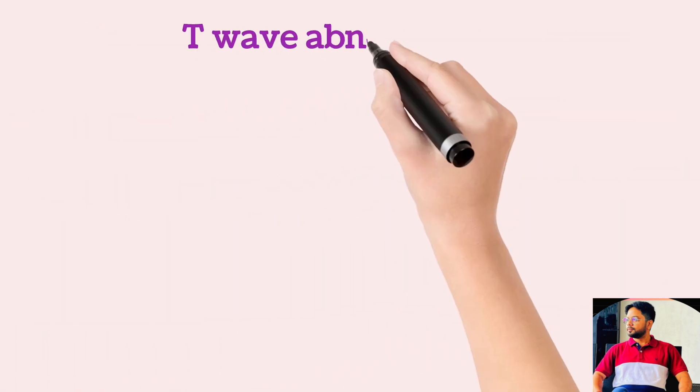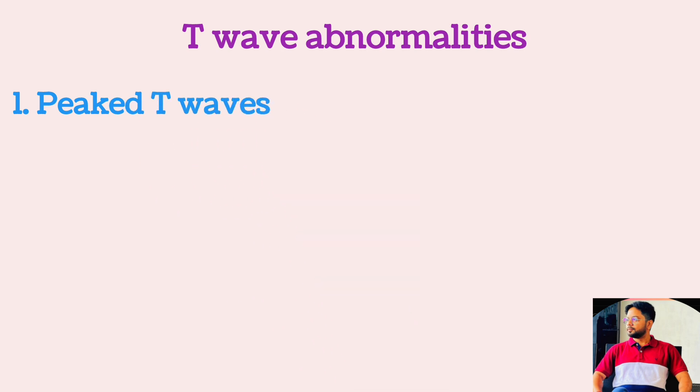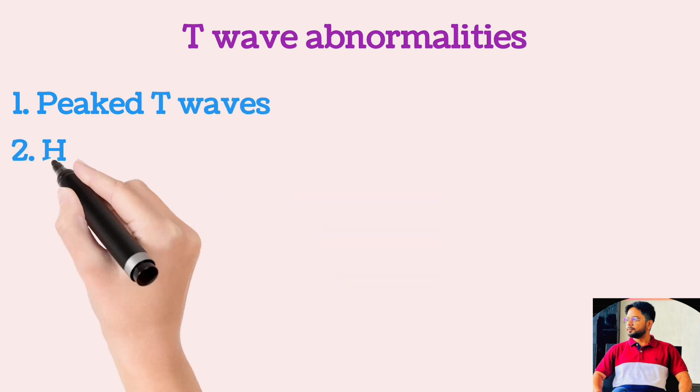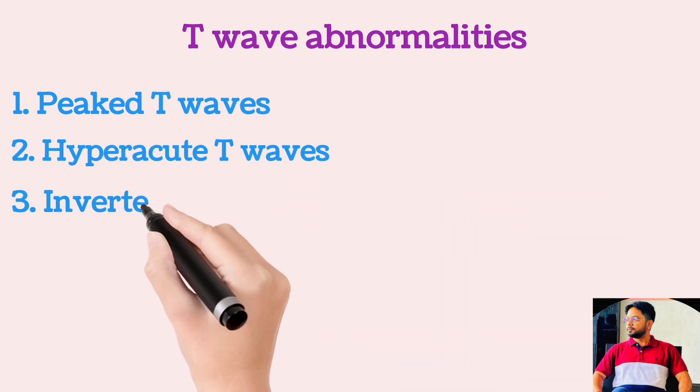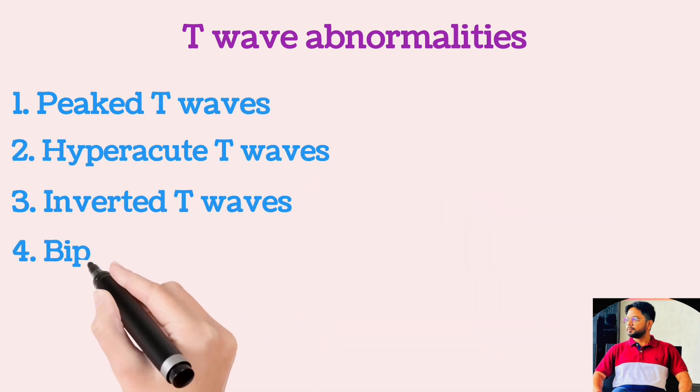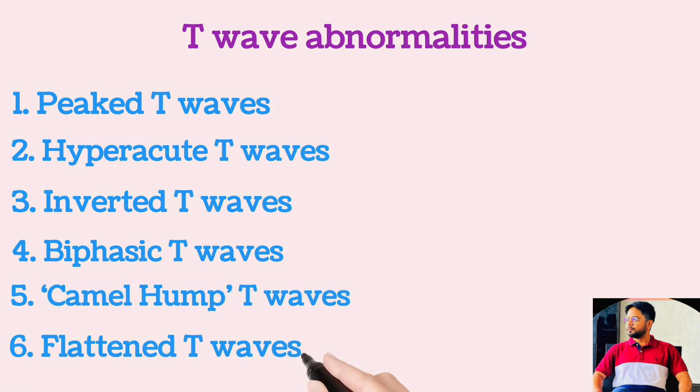The T-wave abnormalities are: peaked T-wave, hyperacute T-wave, inverted, biphasic, camel hump, and flattened T-waves.